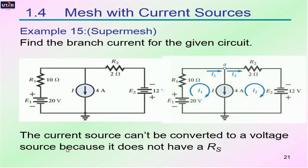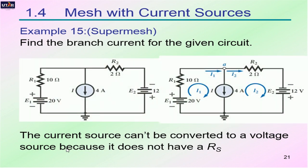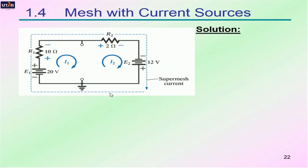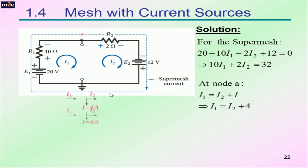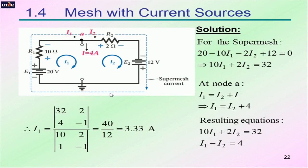Here's another example you might want to explore. Again, a current source falls in the middle of two meshes, so you must use super mesh to solve the circuit. By solving it, we find I1 equals 3.33 ampere.